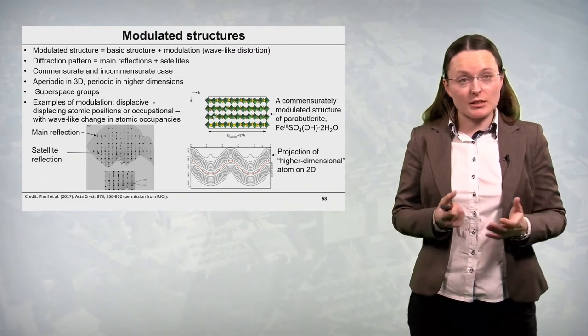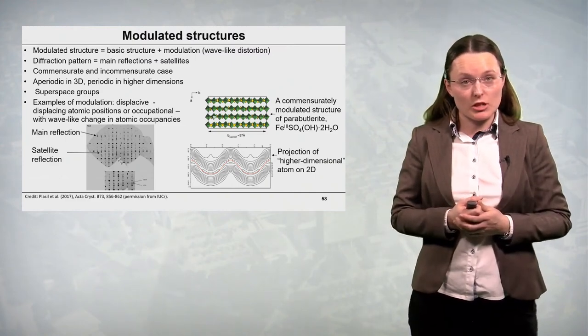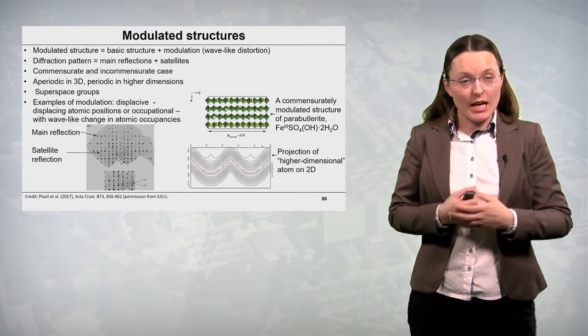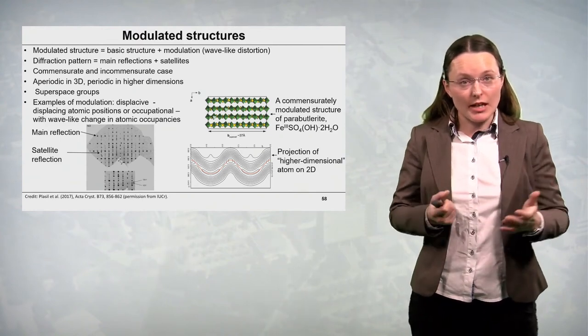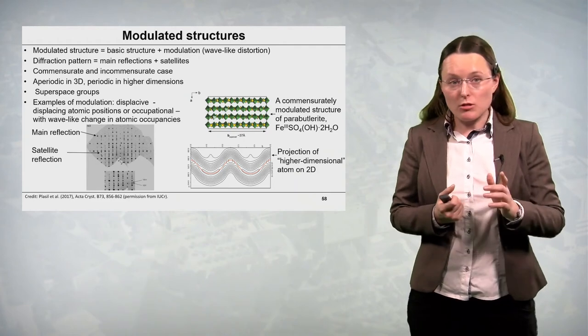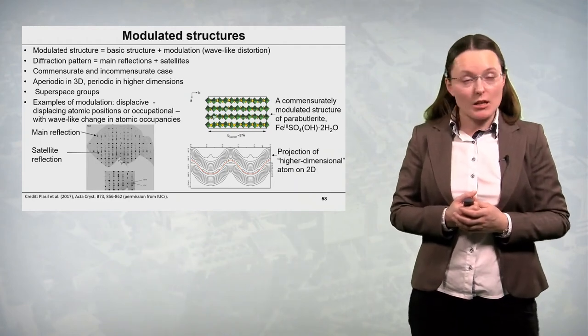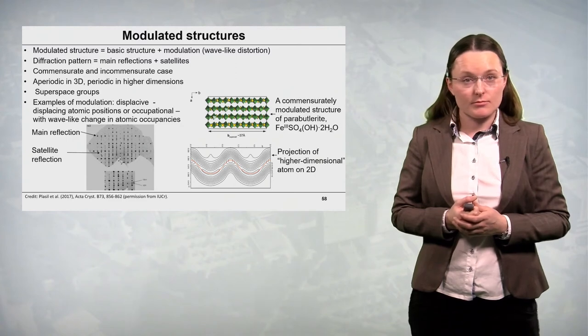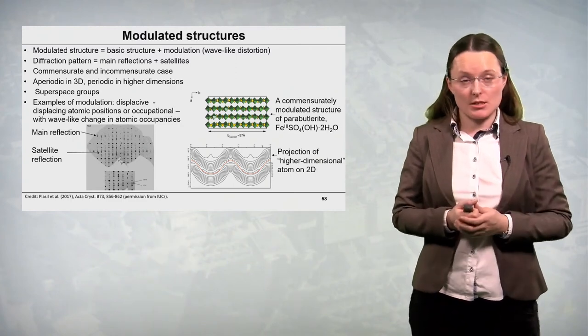On the diffraction pattern recorded for a modulated structure. We observe main reflections of high intensity and well defined Bragg reflections. But we also observe some additional weak reflections called satellites. And we can have two cases here.